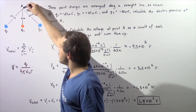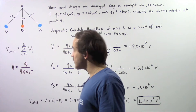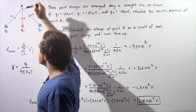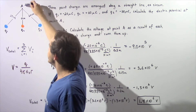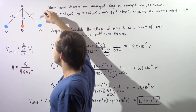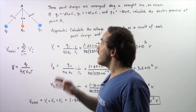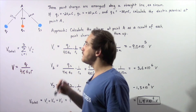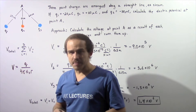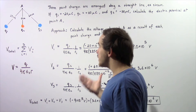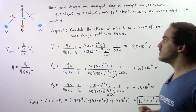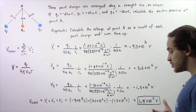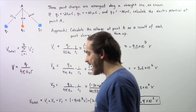Point A is found to be in this position. The distance between point A and charge Q1 is 20 centimeters, and the distance between point A and charge Q3 is also 20 centimeters. The distance between point A and point charge Q2 is 15 centimeters. So knowing this, how exactly are we going to go about calculating the electric potential — the voltage — at point A?